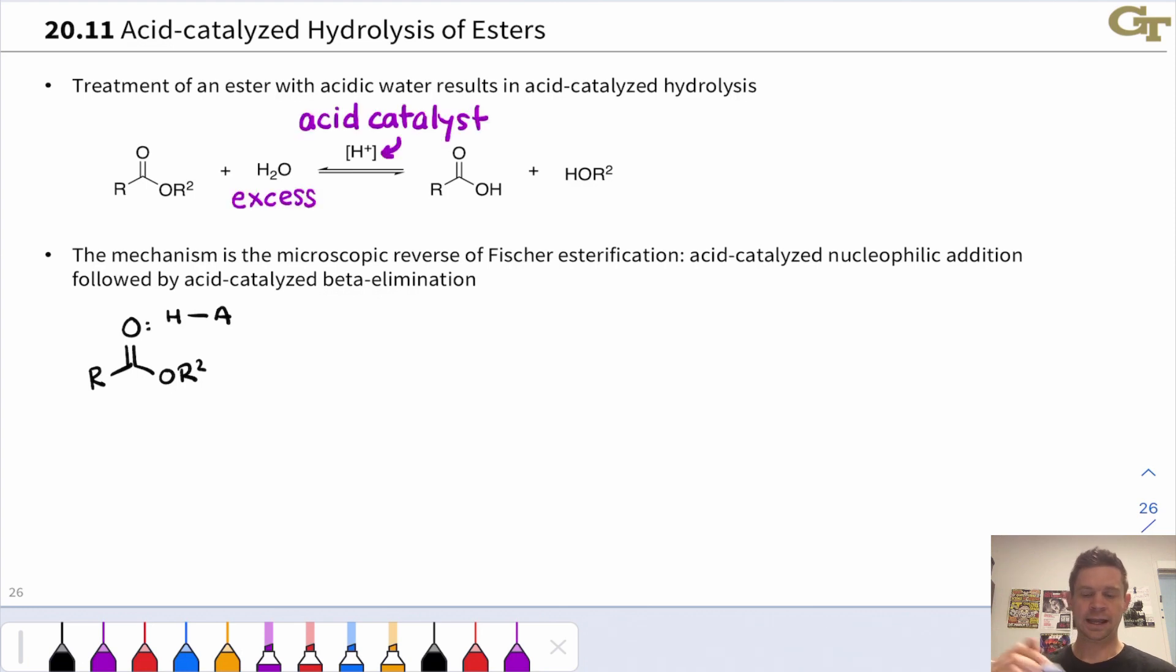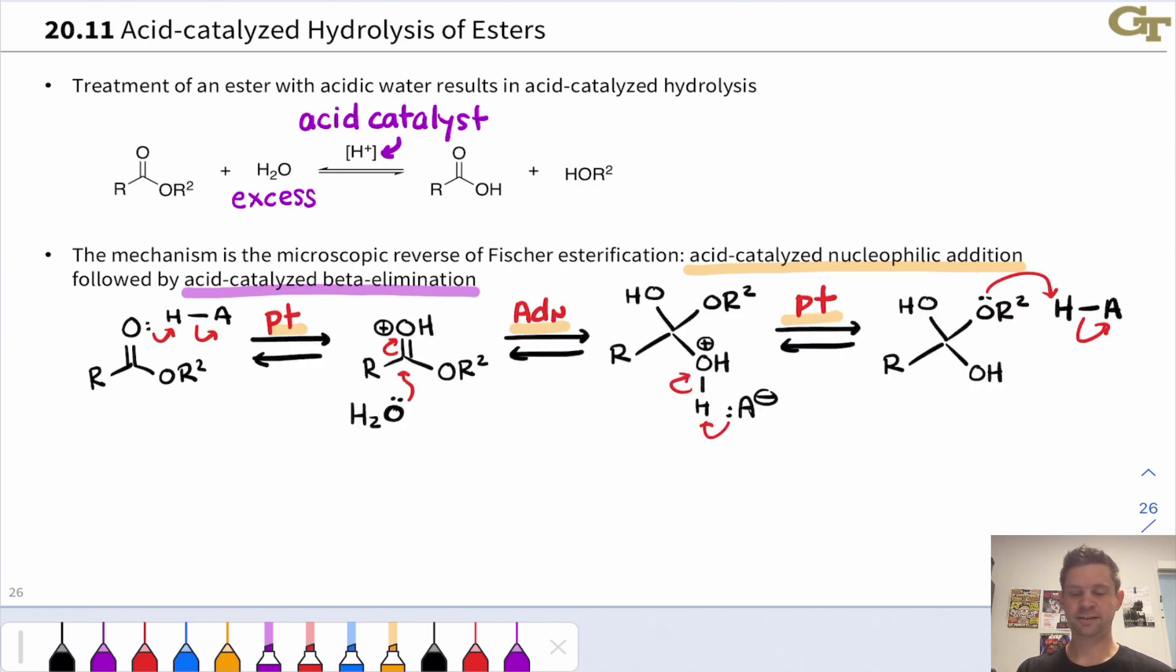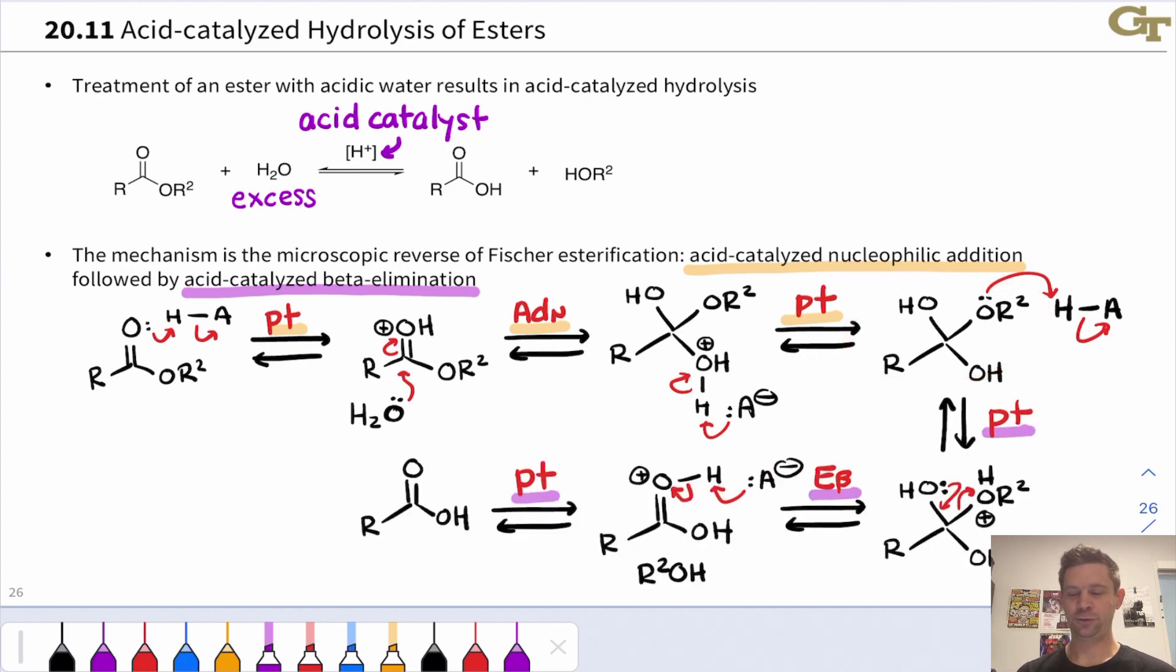The mechanism here has the same two bird's eye view stages as Fischer esterification. First, there's an acid-catalyzed nucleophilic addition stage, and then there's an acid-catalyzed beta elimination stage. In that first nucleophilic addition stage, we put the proton on, the business step of nucleophilic addition occurs—we can see the curved arrows for that right here—and then a deprotonation occurs to get this tetrahedral intermediate. In the second stage, a proton goes on to the OR2 oxygen, preparing to beta eliminate this alcohol. And then after that beta elimination, we remove a proton from the resulting product, and the result is the neutral carboxylic acid.